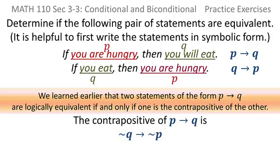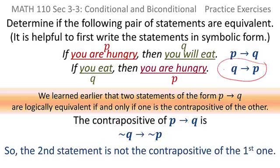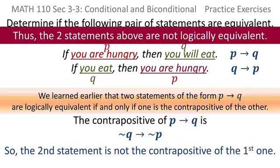Now it's clear that this second statement is not the contrapositive of the first statement. Because if it were, it would be not q implies not p. This is not the contrapositive. This second statement then is certainly not the contrapositive of the first statement. So they're not contrapositive of each other. That means that they're not equivalent.